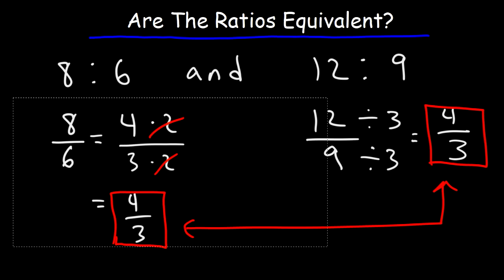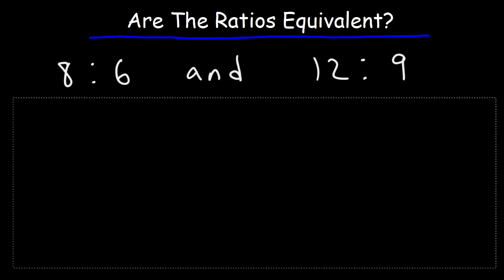Now, let's talk about the second method. So let's convert the ratios into fractions and put an equal sign between the two fractions. Now, what I want you to do is cross multiply. So first, we're going to multiply 8 by 9. 8 times 9 is 72.